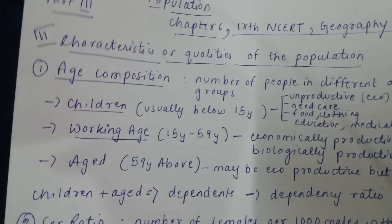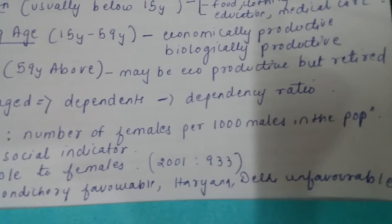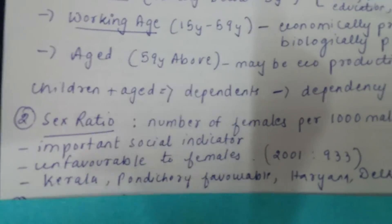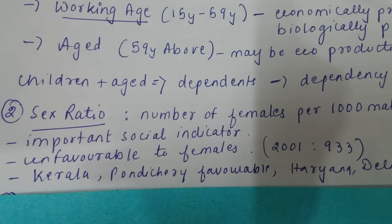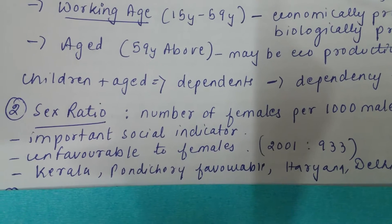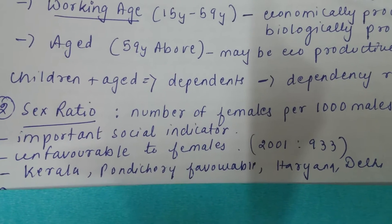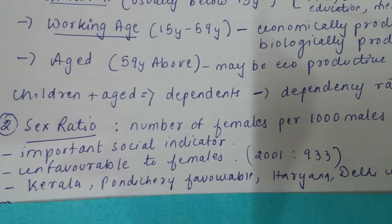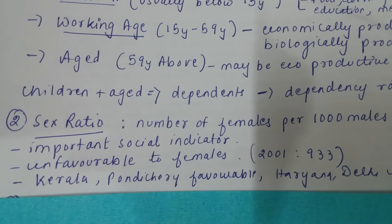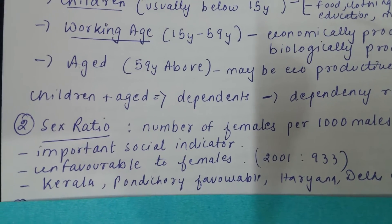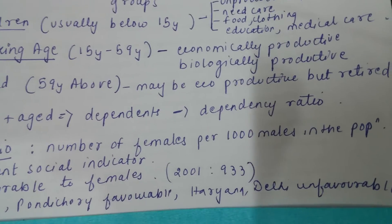Now coming to the next point in composition — sex ratio. Sex ratio is the number of females per thousand males in the population. For example, if the sex ratio is 933 in 2001, it means that for every 1000 males in a place, there are only 933 females. The base is always 1000 males, and the number of females tells us the sex ratio.